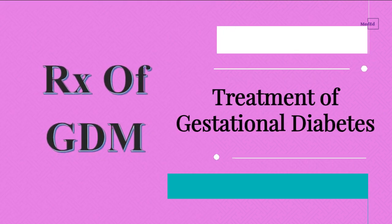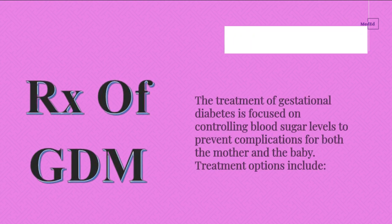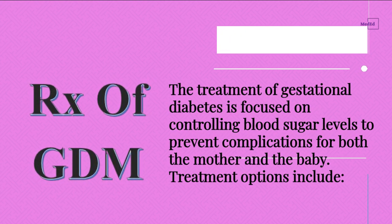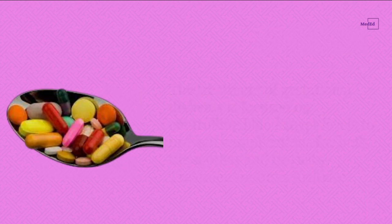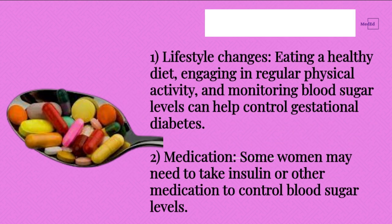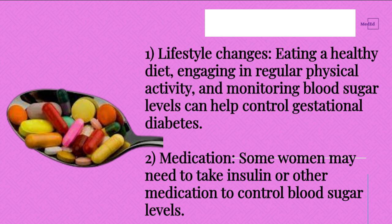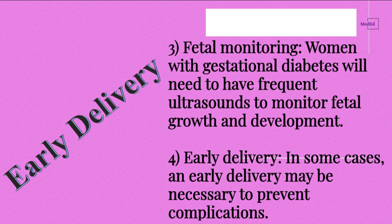Treatment of Gestational Diabetes. The treatment of gestational diabetes is focused on controlling blood sugar levels to prevent complications for both the mother and the baby. Treatment options include: 1. Lifestyle changes — eating a healthy diet, engaging in regular physical activity, and monitoring blood sugar levels can help control gestational diabetes. 2. Medication — some women may need to take insulin or other medication to control blood sugar levels. 3. Fetal monitoring — women with gestational diabetes will need to have frequent ultrasounds to monitor fetal growth and development. 4. Early delivery — in some cases, an early delivery may be necessary to prevent complications.